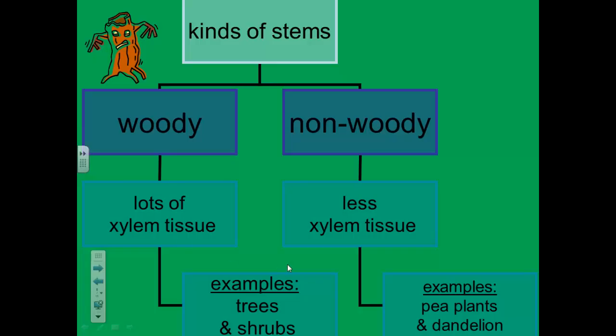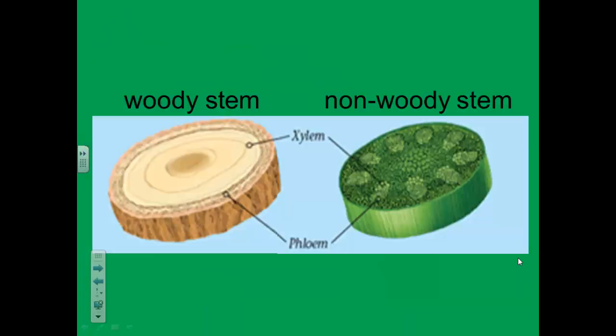Here's a graphic organizer of what I just said. And here's a cross-section view of a woody stem and a non-woody stem. As you can see, the xylem is much wider in a woody stem and less wide in a non-woody stem.